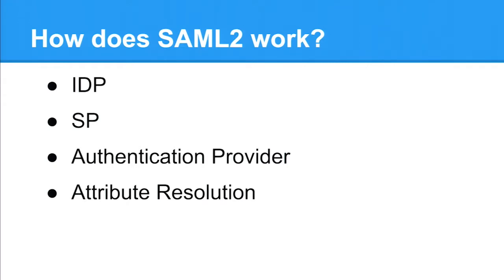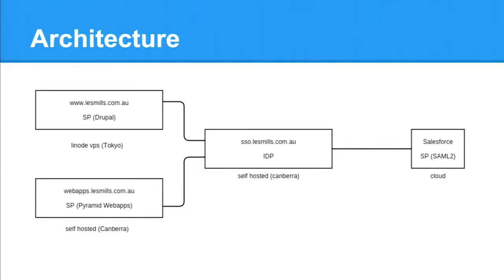How does it work? There are two main components for single sign-on: an identity provider, referred to as the IDP, and a service provider called the SP. The IDP is responsible for authentication and attribute resolution. The SP is responsible for protecting the resources - it has a definition associated with it saying this particular path requires these permissions and requires authentication. That's just in your htaccess file in Apache.